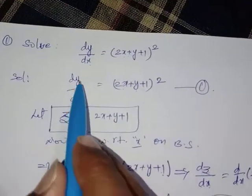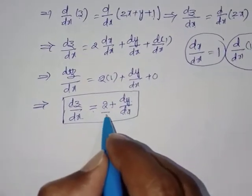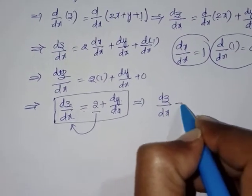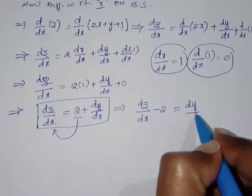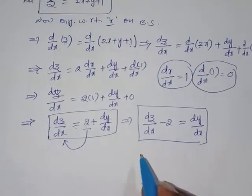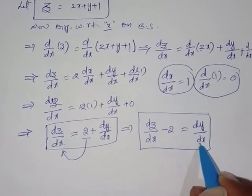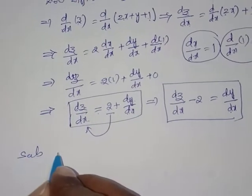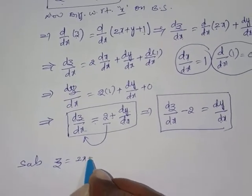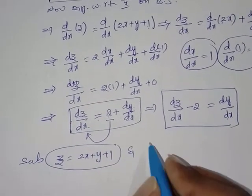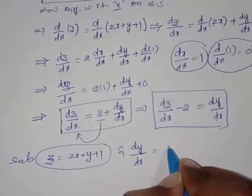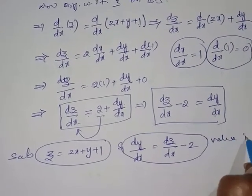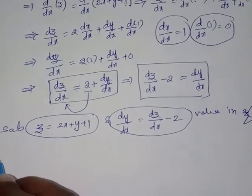From dz/dx = 2 + dy/dx, we need to find dy/dx from equation 1's differentiation. Rearranging: dy/dx = dz/dx − 2. Now substitute the dy/dx and z values into equation number 1, where z = 2x + y + 1 and dy/dx = dz/dx − 2.